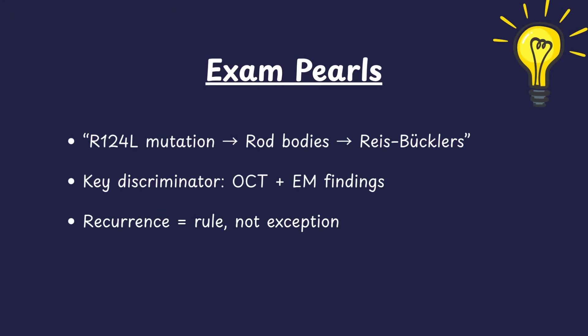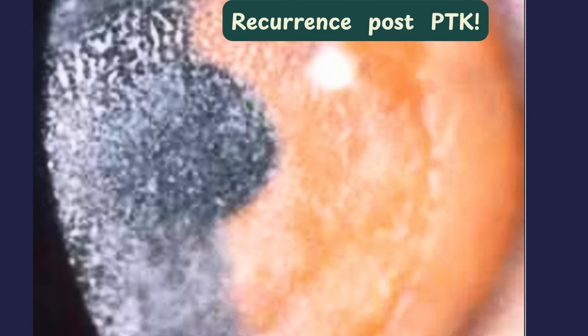High-yield examination pearls for RBCD: autosomal dominant corneal dystrophy involving the Bowman's layer; R124L mutation in the TGF-β1 gene; early onset recurrent erosions from childhood; rod-shaped bodies on electron microscopy; sharp hyper-reflective anterior segment OCT band at the Bowman's layer; and high recurrence rate after PTK or keratoplasty. A post-PTK patient image shows some recurrence of central corneal opacities, but vision is improved compared to the pre-treatment state.